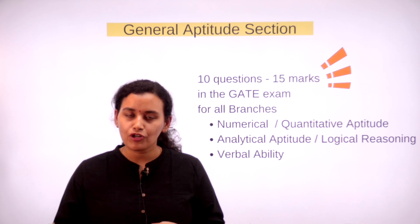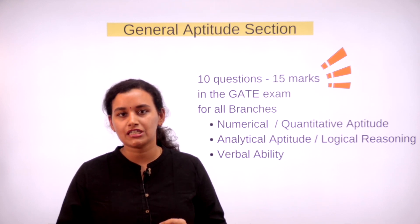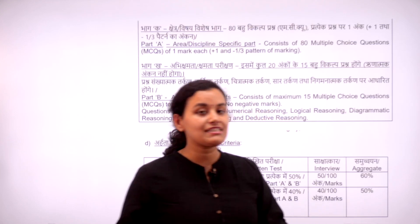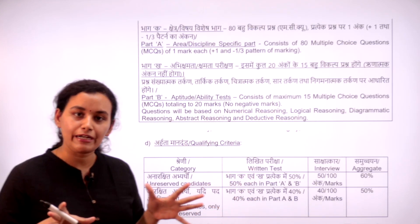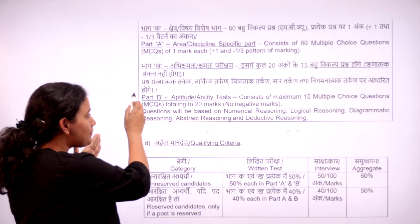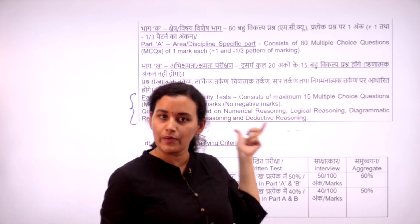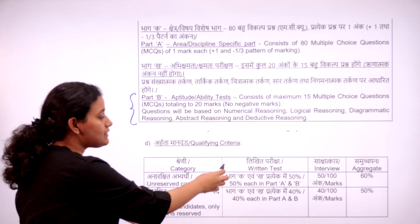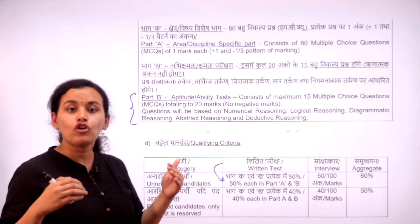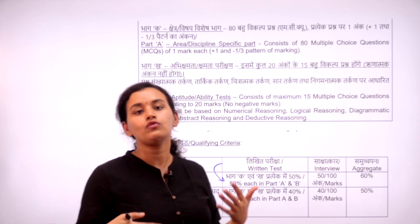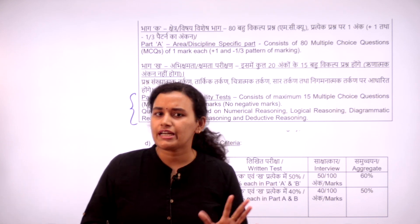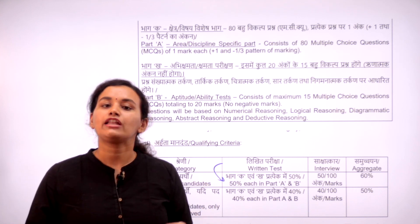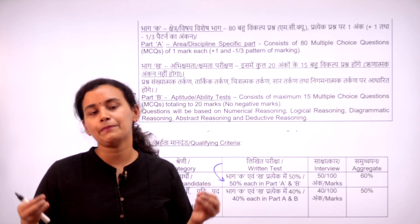Not only in GATE, but the general aptitude section is being tested increasingly in many technical examinations at the national or state level. A recent example is the ISRO notification for scientist posts, where the general aptitude section is a separate Part B totaling 20 marks (15 questions), and you need to score at least 50% in that part to qualify for the interview round.